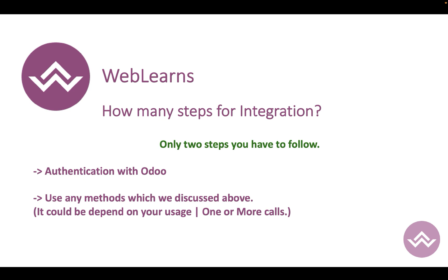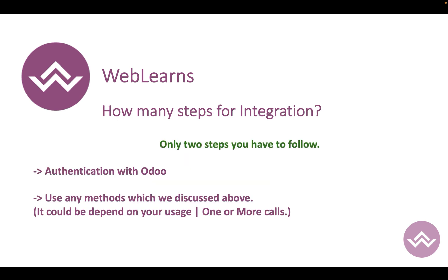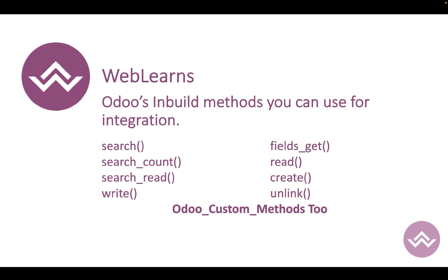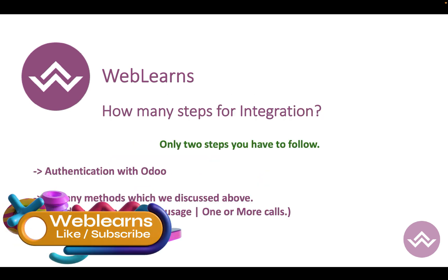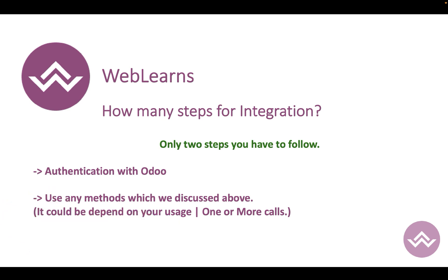There are only two steps to integrate with Odoo. The first step is authentication using the Odoo URL, database, username, and password — or the API key. The second step is performing CRUD operations using the available methods, which we will discuss in further sessions. With just these two steps you can easily integrate with any Odoo version.